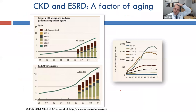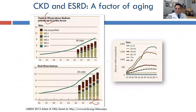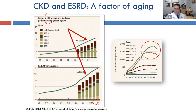I want to bring up some of the new interventions on the map that may change how we manage these patients. This is an older slide - it only goes up to 2011 - but there's been a significant increase in patients with CKD, and those requiring dialysis. This is ongoing, and to a large extent it's related to the aging of our population. If we look at the oldest age groups, that's where we're seeing most of this rise.